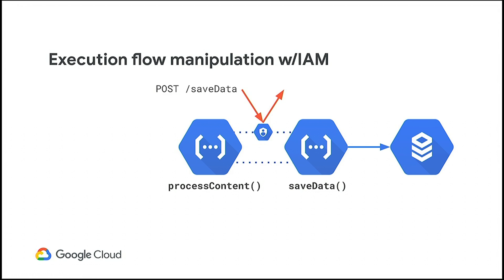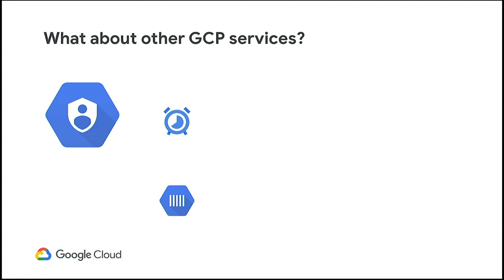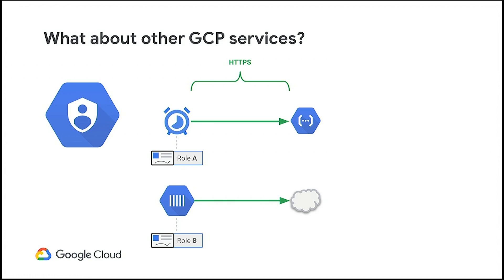With IAM, the first function can allow all users to invoke it, giving them the Cloud Functions Invoker role. On the second function, only the first function can invoke it — securing the channel between the two functions. If someone tries to directly call the save data function, IAM blocks them. Developers can test by using curl with an identity token pulled from gcloud. Cloud services like Cloud Scheduler, Tasks, and PubSub can get a service account with a role to make authenticated requests, secured in transit via SSL plus the identity token validated by IAM.